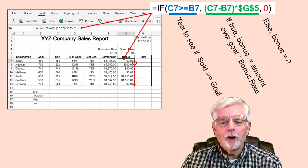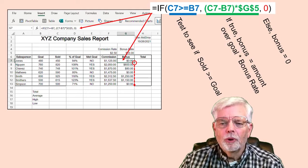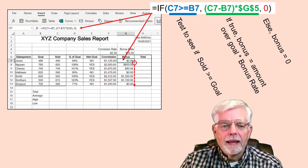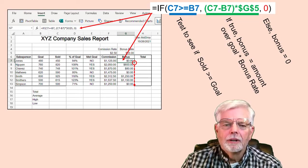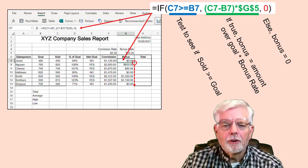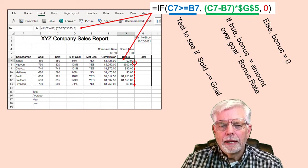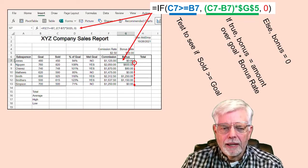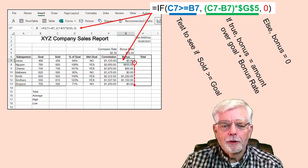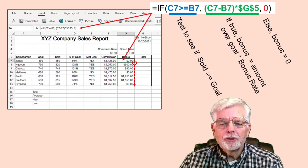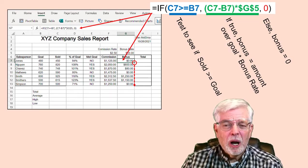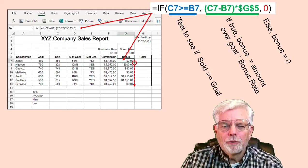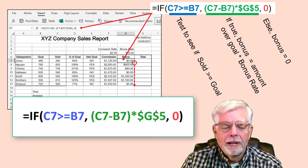Employees get a $10 bonus for each item sold that is over their goal. If they don't make their sales goal, then no bonus. It sounds like we need another IF function. Let's start out computing any possible bonus for Jones, the first employee. Select cell G7 that holds Jones' bonus.